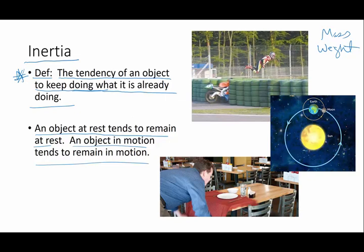For example, this poor fellow hit these tires with his motorcycle, and since there's no seat belts on a motorcycle, when the bike stopped, his body was still going forward at the same speed that the motorcycle was going. And so he ends up flying through the air. That is a beautiful example of inertia.